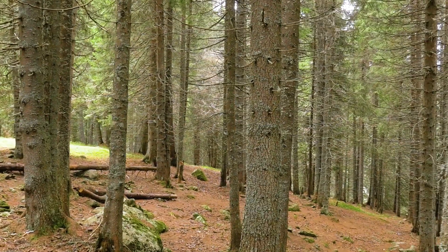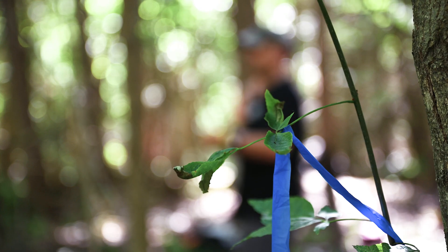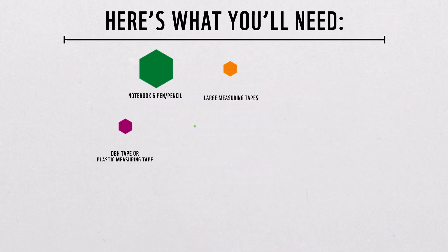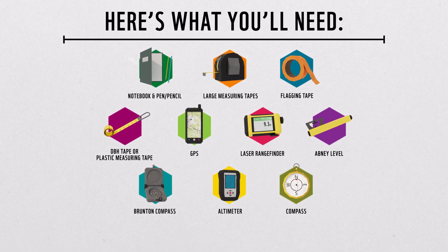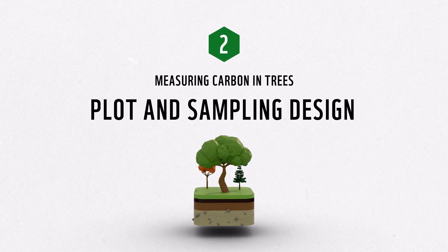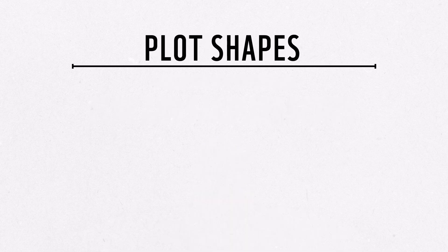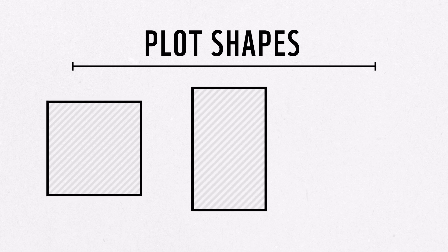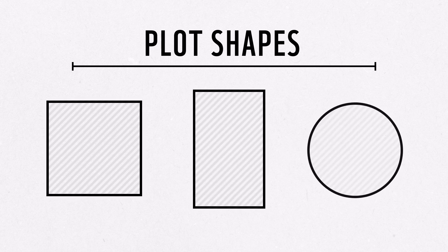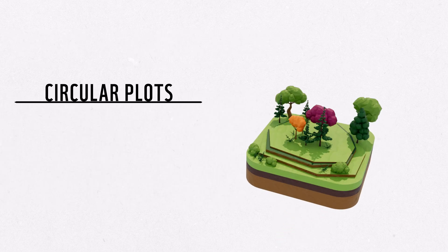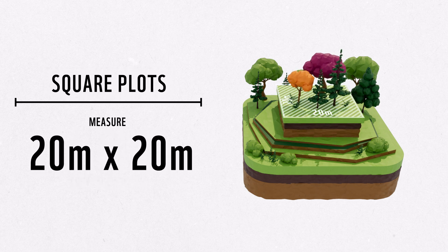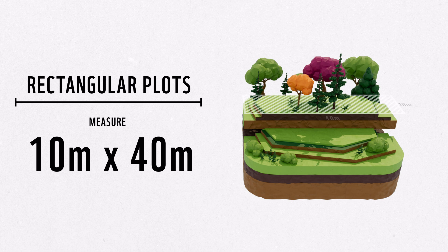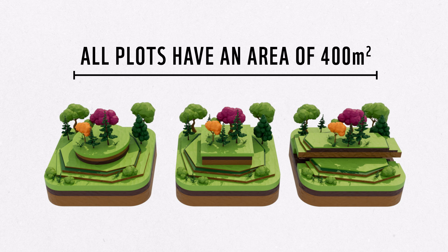Once you have defined the study area and sites and mapped your plots, you can begin to obtain tree data. Here is a list of the required equipment for completing tree surveys. A detailed equipment list can be found in the accompanying guide. Individual plots can be set up as squares, rectangles, or circles, depending on the landscape, research question, and tools available. Circular plots have a radius of 11.28 meters. Linear plots are square with dimensions of 20 meters by 20 meters, or rectangular with dimensions of 10 meters by 40 meters. This means that all plots following these dimensions will have an area of 400 meters square.